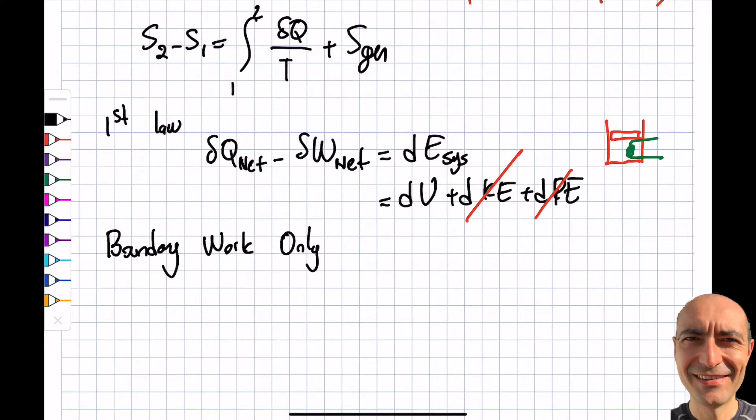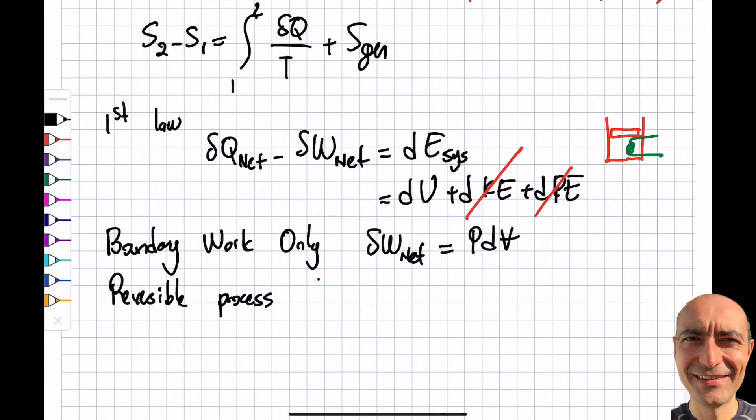There are multiple applications from that end, so it's not a huge limitation, but you know what you're doing. Simply what I'm saying is this Wnet only is PdV, and I will pick a reversible process at this point in time. Actually, I'm going to relax that going a little further down the road.